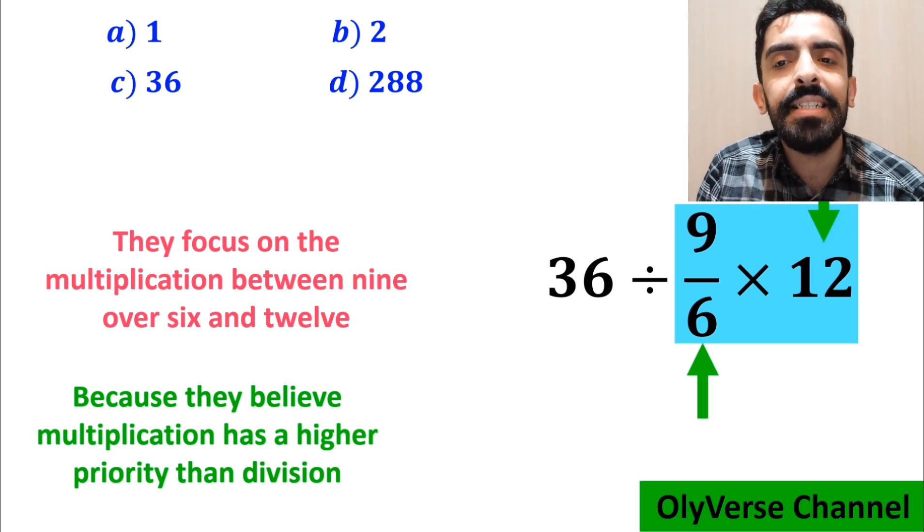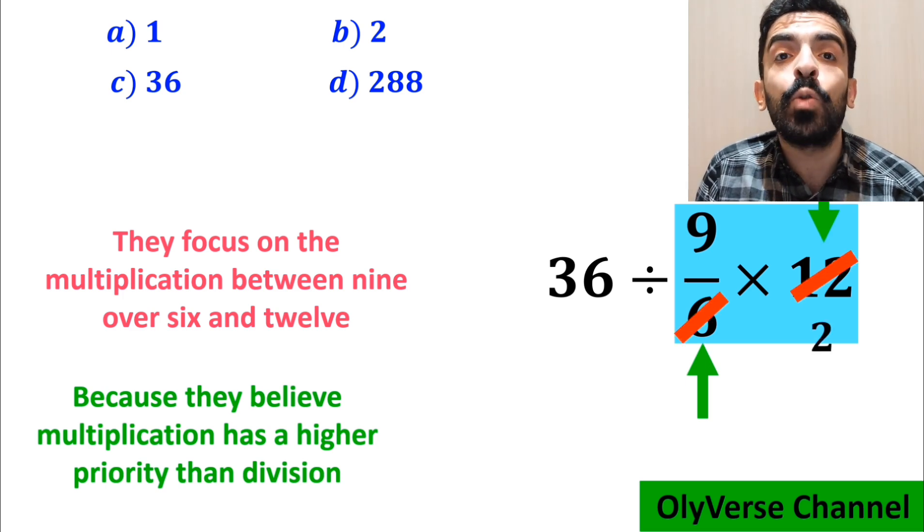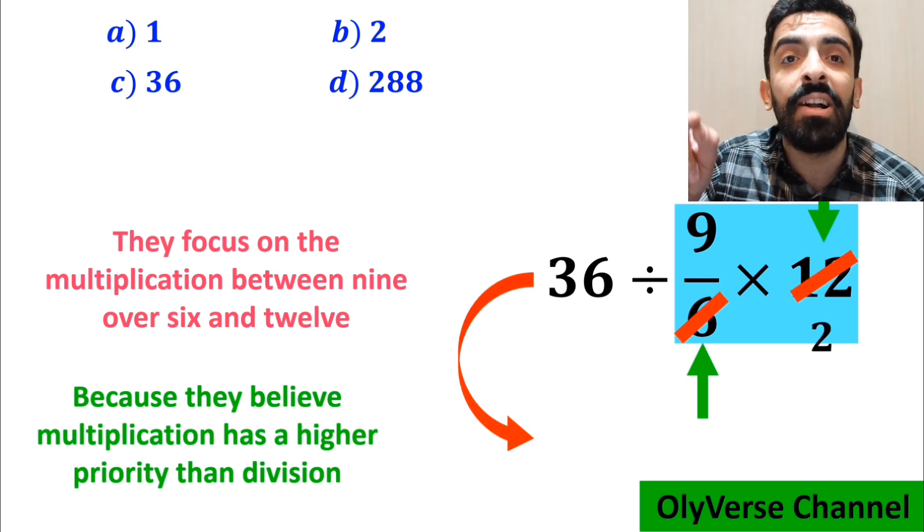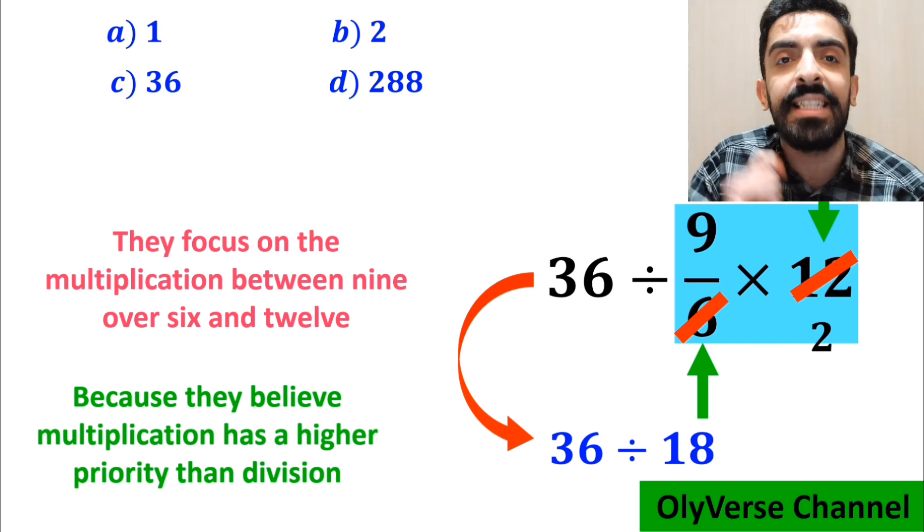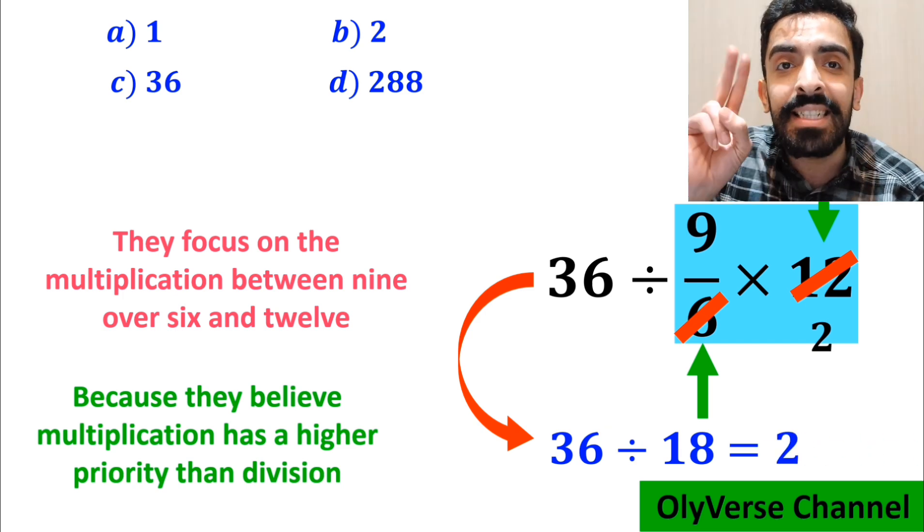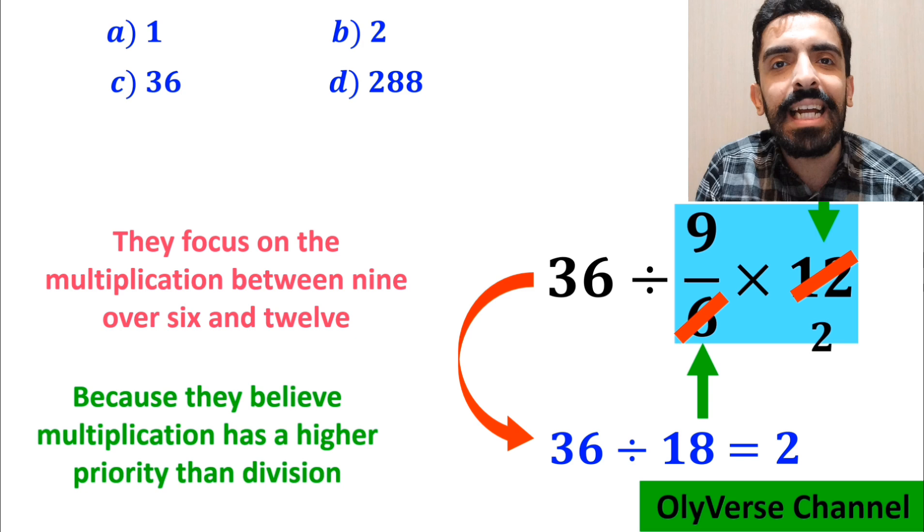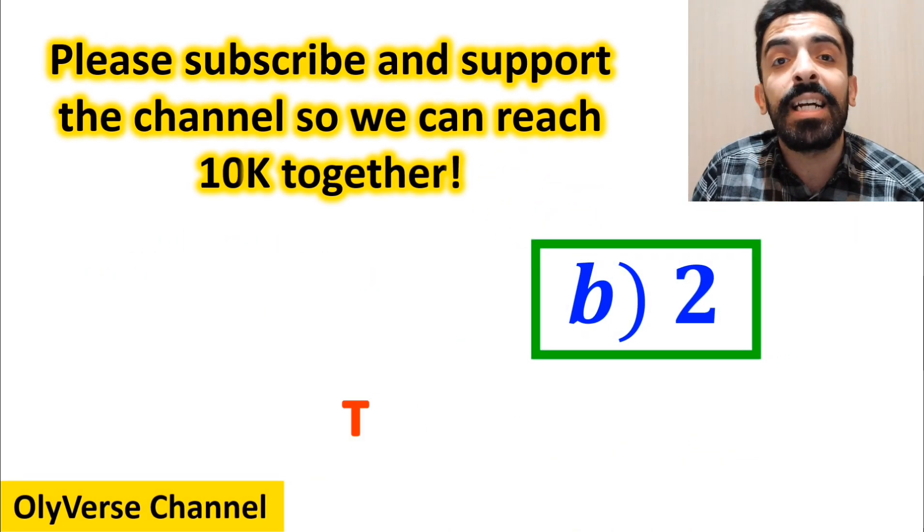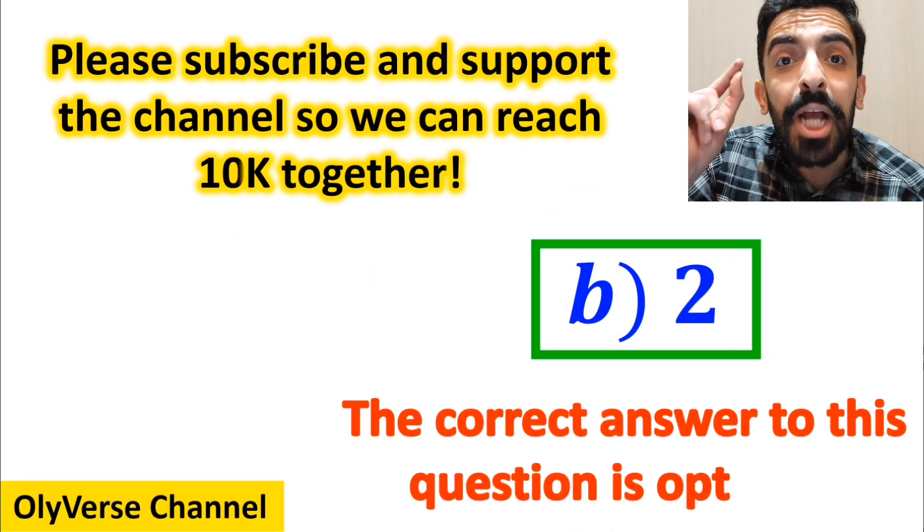As you can see in the image, they simply cancel out 12 with the 6 in the denominator, and this expression simplified to 36 divided by 18, which finally gives them the answer 2. And immediately, they conclude that the correct answer to this question is option B.